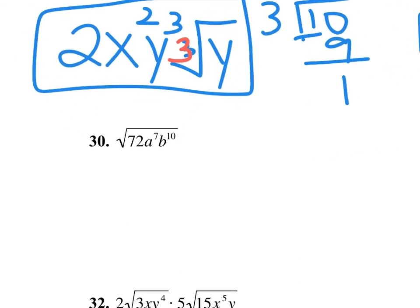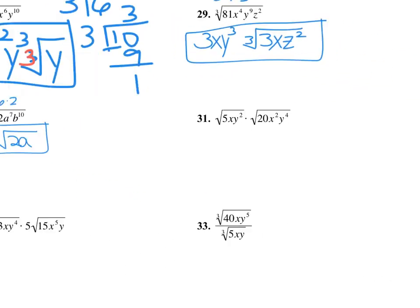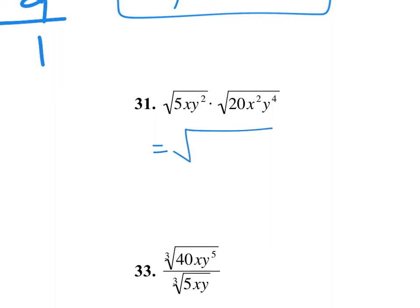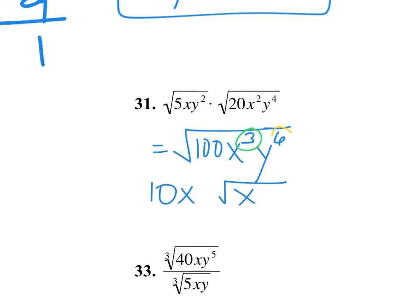Number 30: find a perfect square that goes into 72. You might think 9, but 36 is bigger. Take the square root of 36, which is 6, and the 2 stays back. There's a pretend 2 as the index — 2 goes into 7 three times with 1 remainder, and 2 goes into 10 exactly 5 times. Multiplying: 5 times 20 is 100, x times x squared is x cubed, and y to the 6th. The square root of 100 is 10. 2 goes into 3 once with 1 remainder, and 2 goes into 6 exactly 3 times — there's your answer.